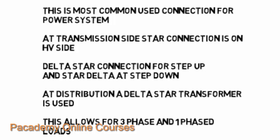At distribution level, a delta-star connection of transformer is used. This allows for three-phase and one-phase loads. The three-phase loads can be directly supplied to large industries, while the single-phase loads can be used for distribution to domestic households where single-phase equipment are used.